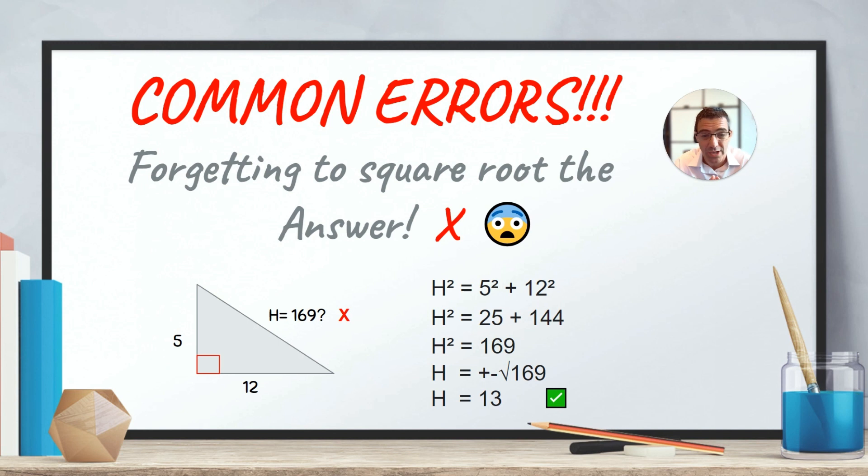Now, for the work here, you see that we do H squared equal 5 squared plus 12 squared. So we start with H squared equal. So let's assume we're looking for the hypotenuse. 5 squared, 25. 12 squared, 144. So we'll do H squared equal 25 plus 144. And we get to this point here, which is H squared equals 169.